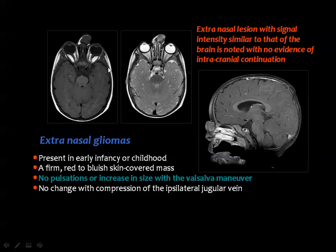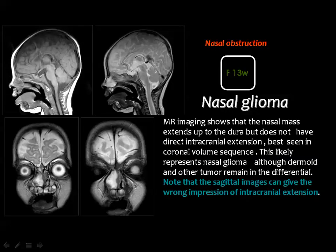This is an extranasal glioma: you see the mass at the root of the nose with intact calvarium and no connection between the lesion and brain tissue. However, in this particular pathologically proven nasal glioma, the sagittal images may suggest intracranial continuity, hence the importance of coronal images. The coronal images confirm the lesion inside the nose with no connection to brain tissue.